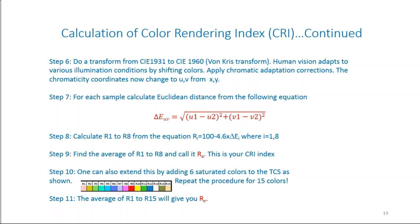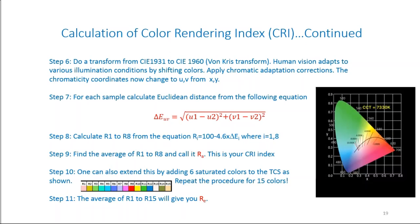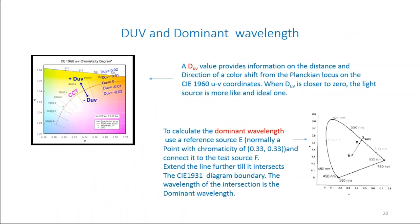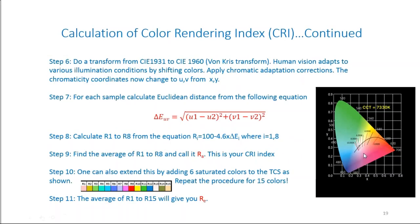You can also extend this by adding six more saturated colors, doing this for 15 colors instead of 8, and calculating the index RE. The lighting passport gives you both RA and RE, as well as individual values for each color index.